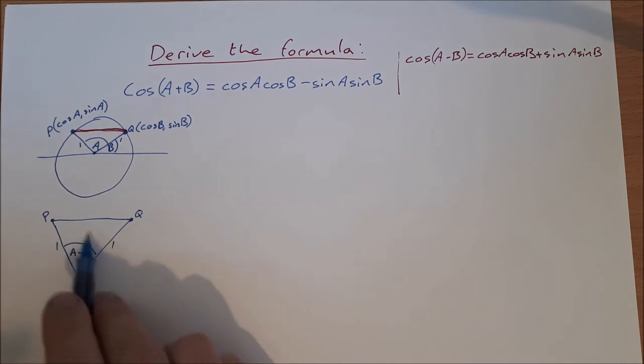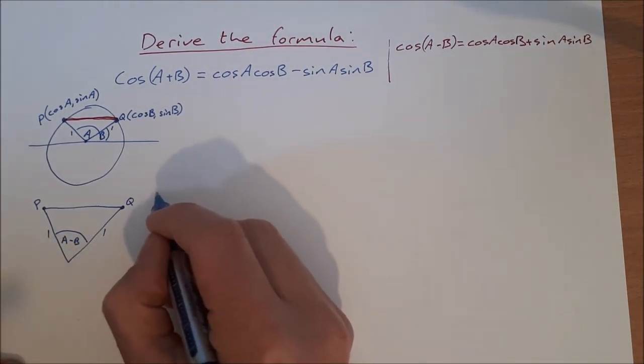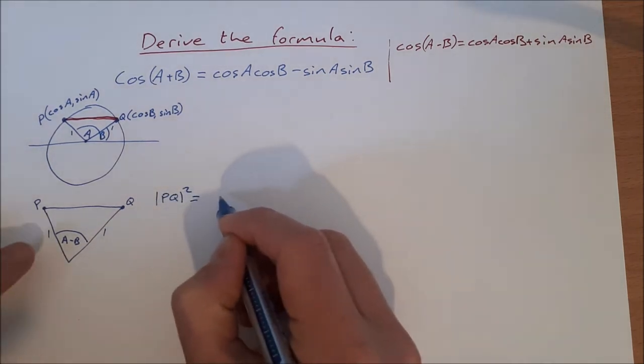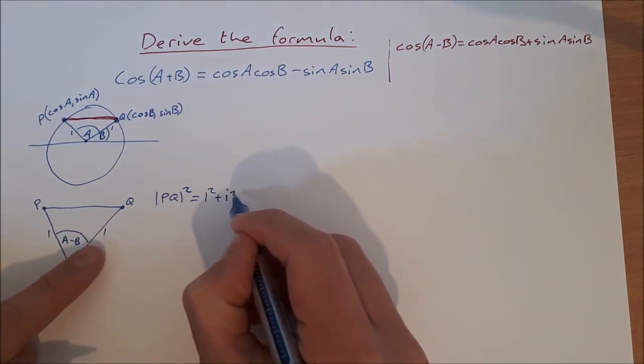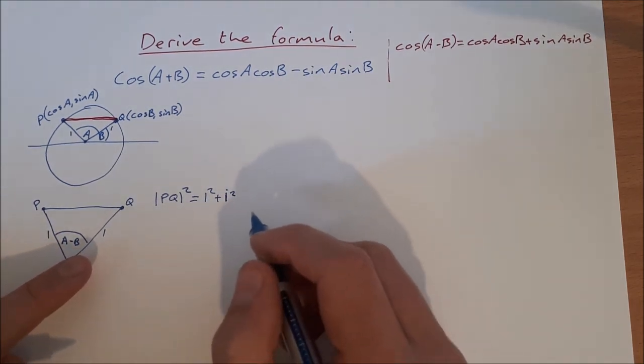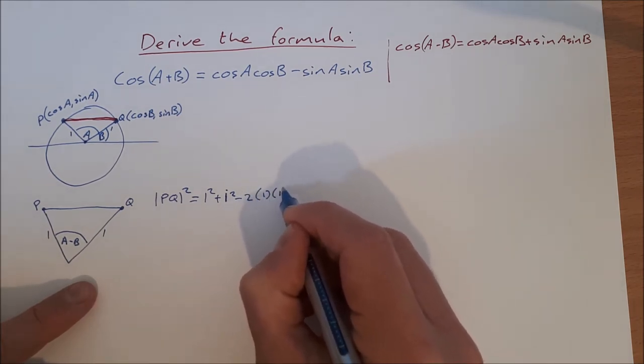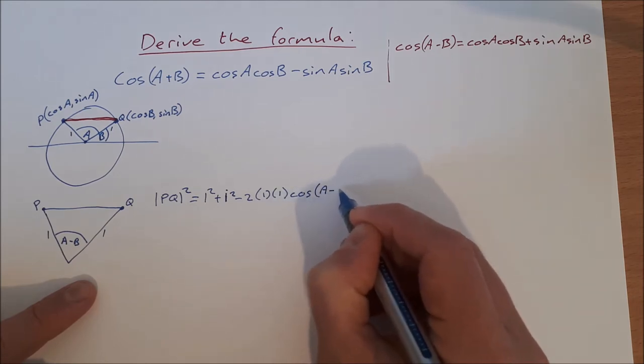So the first thing I do is I use the cosine rule to find the length from P to Q, so the length of this side in the triangle. So using the cosine rule, I get the length of PQ squared is equal to 1 squared plus 1 squared minus 2 times 1 times 1 times the cosine of A minus B.